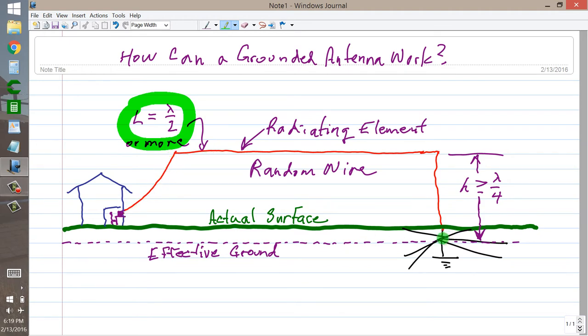If it's solidly grounded for RF here, then a quarter of a wavelength from that point, it will have a very high impedance. You will have a current loop here, a current node here, a voltage loop here, and a voltage node here.